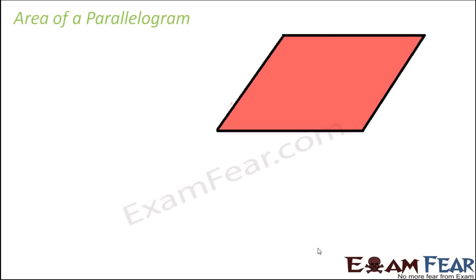So what we will do is, in order to find out the area of this parallelogram — that is the entire red region inside — we will try to relate this parallelogram to one of the known figures. Known figures in the sense the figures we have discussed so far: rectangle or square. We cannot relate it to a square because a square has all sides equal. So let us try to see if we can somehow relate it to a rectangle. So first of all let us name this parallelogram as A, B, C and D.